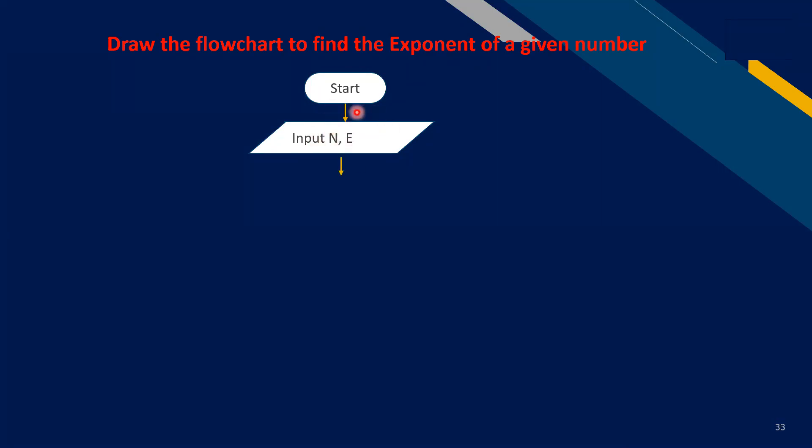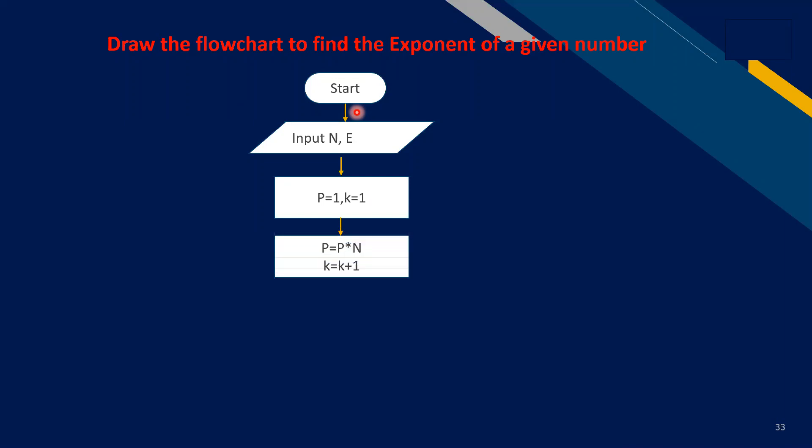Now flowline, and p where we will put the final value and k is used for the increments as a loop. P equals p multiplied by n, and k equals k plus 1.